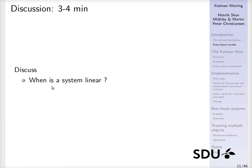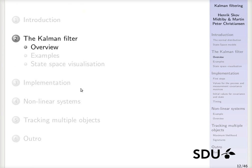One thing to think about is when is the system linear — that is, what type of system can we actually use this plain Kalman filter for? I would suggest you think about this for a few minutes, and then go on with a quick overview of how the Kalman filter actually works, followed by a specific example — a visualization of the state space of a working Kalman filter.